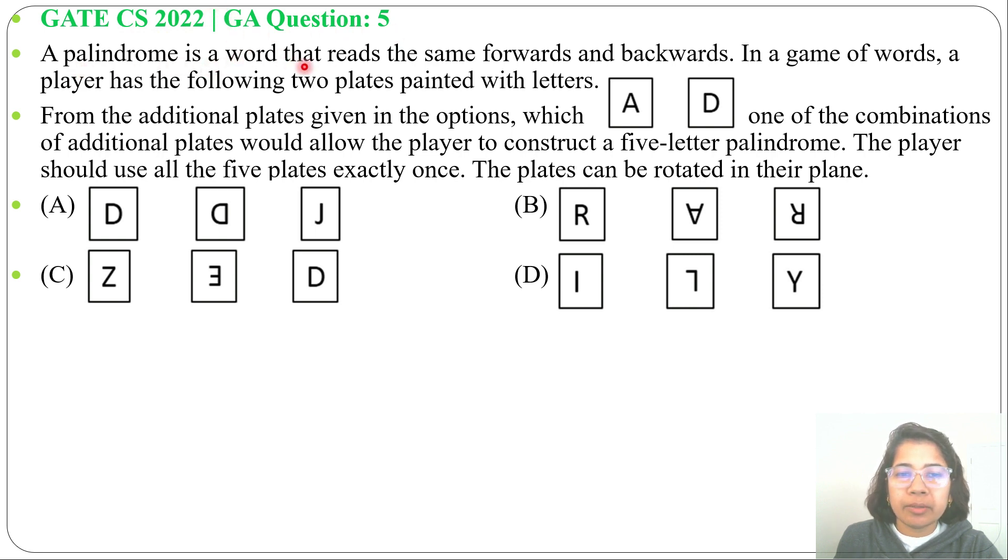A palindrome is a word that reads the same forwards and backwards. In a game of words, a player has the following two plates pertinent with letter A and D. From the additional plates given in the option, which one of the combinations of additional plates would allow the player to construct a 5-plate palindrome?